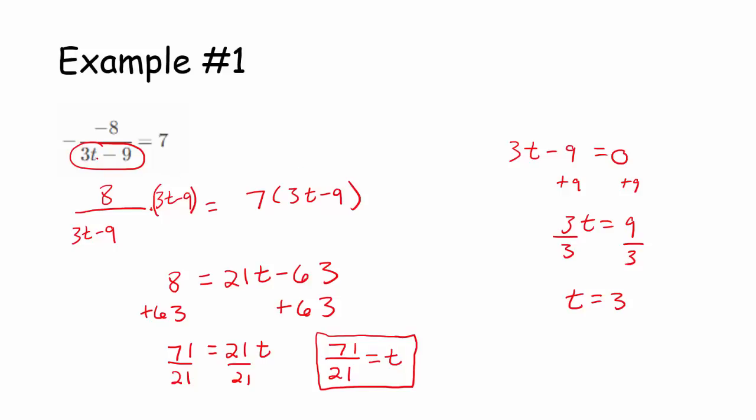So really, I want to think of this as, what can t not equal? t cannot equal 3, but that's not a problem, because t is 71 over 21, which is approximately 3.381. So, this is totally fine.